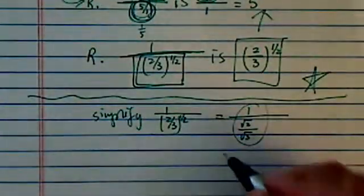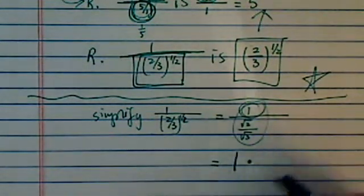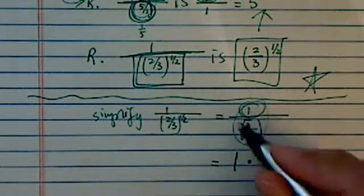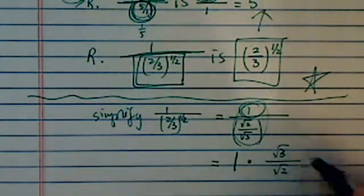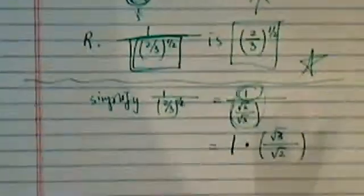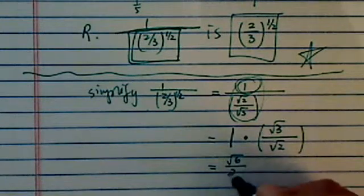Now here we have a compound fraction. So the way we deal with compound fraction is we keep the top, which is 1. We're going to multiply the reciprocal, which is radical 3 on top, radical 2 on the bottom. So now we'll just simplify this one.